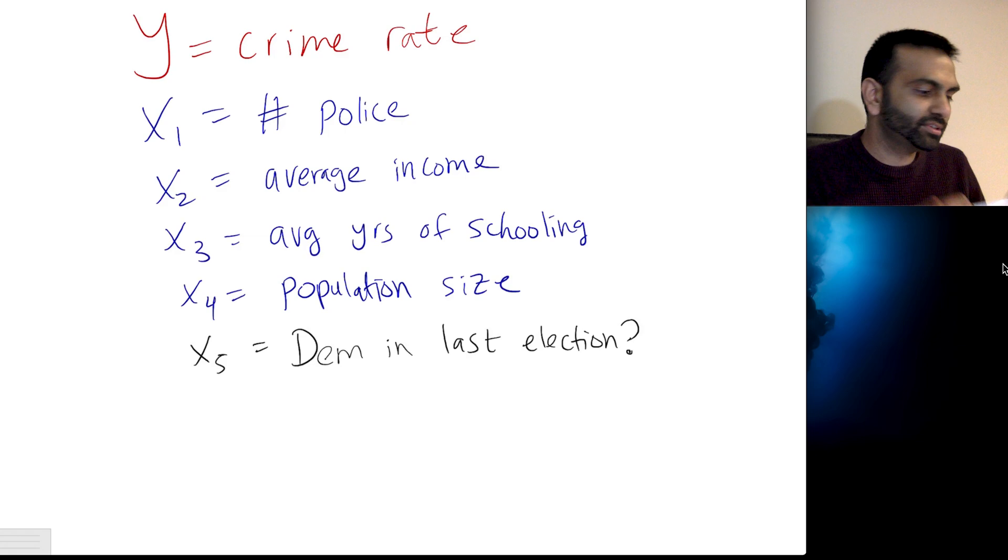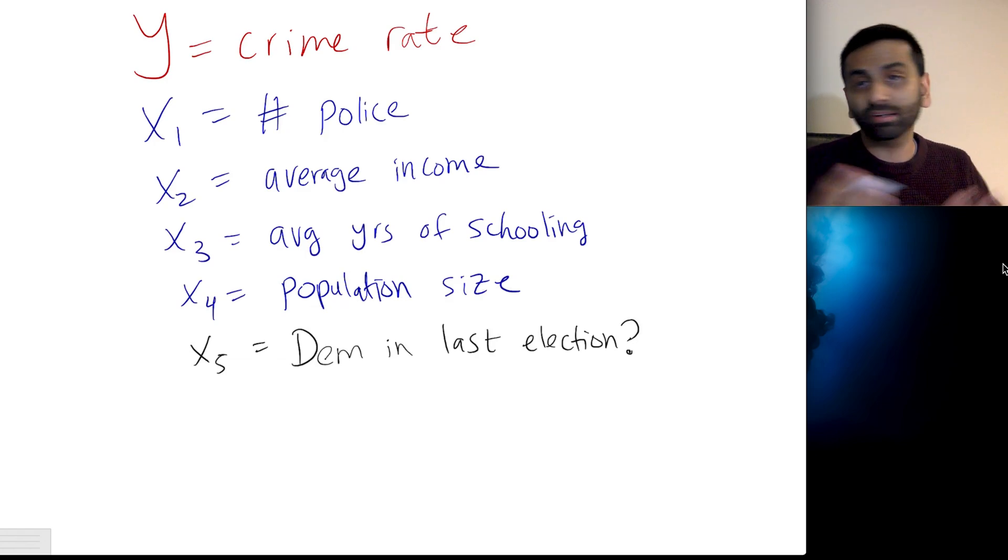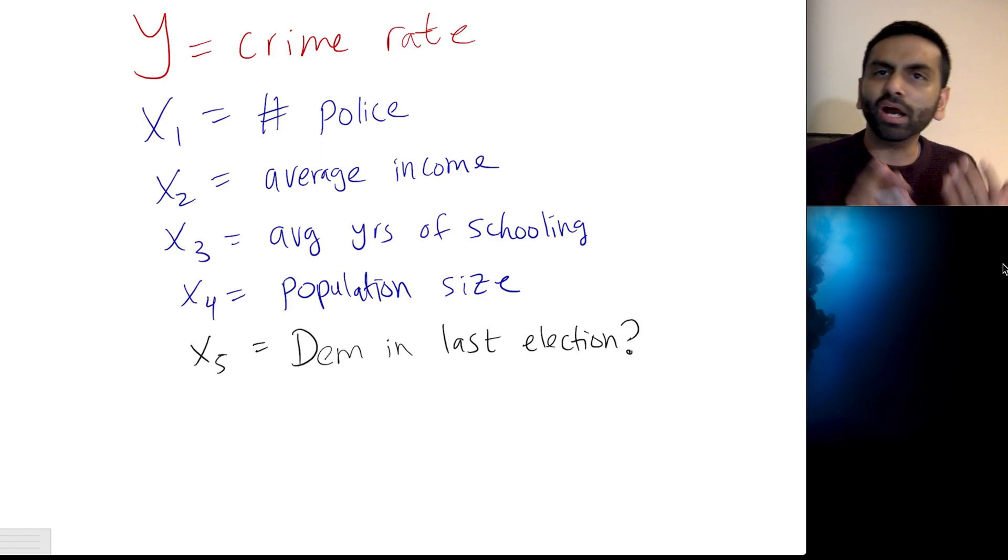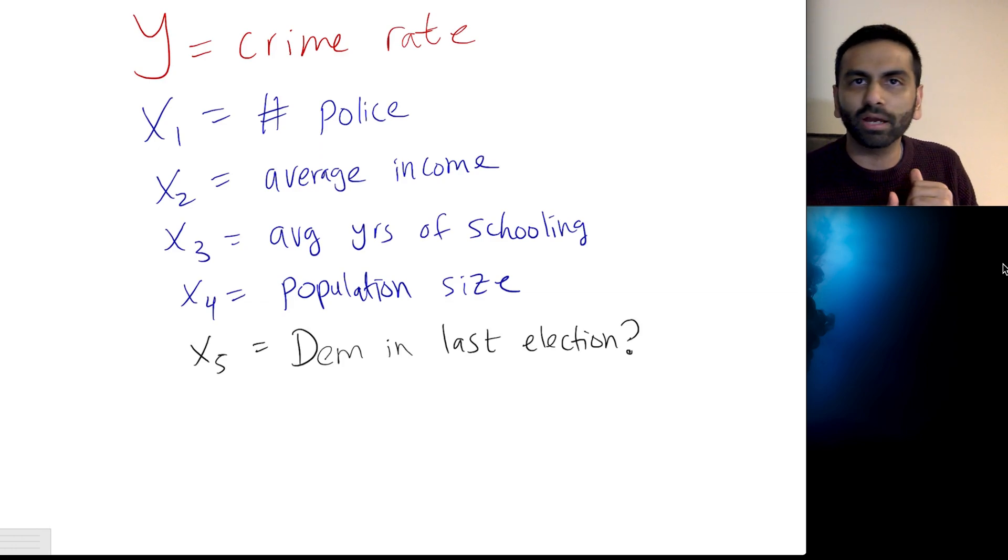Let's say just here's a few of them that might be, for example, the number of police in that state overall, that could even be police per 1,000 people or something. The average income level of that state, the average years of schooling of people in that state, the population size, who knows, maybe larger states have something versus smaller states. And maybe a yes or no question of, did that state vote democratic in the last presidential election, for example.